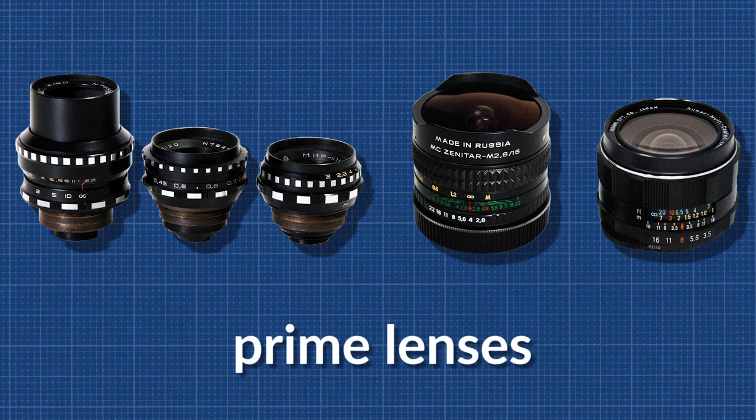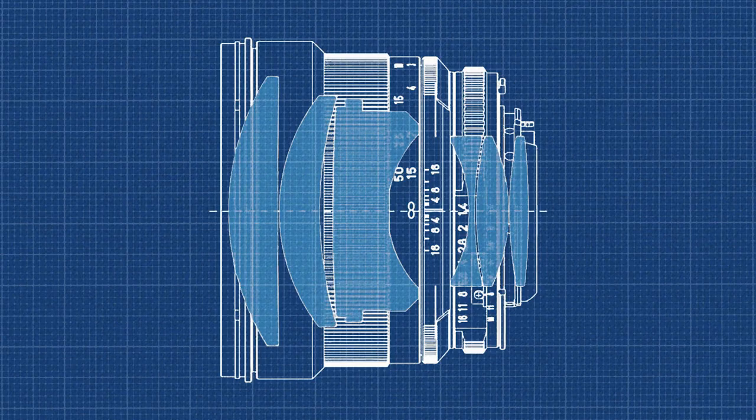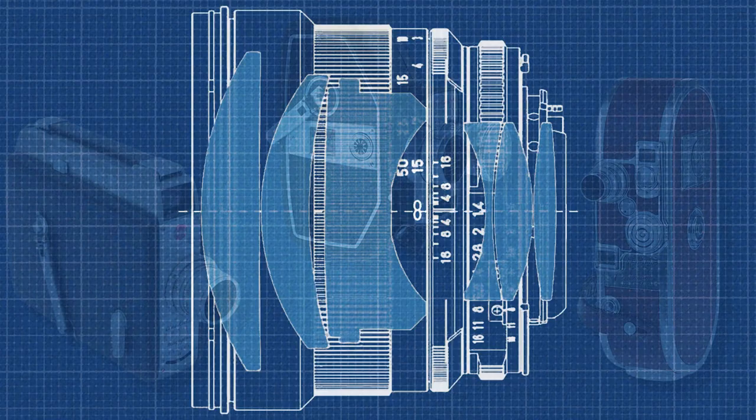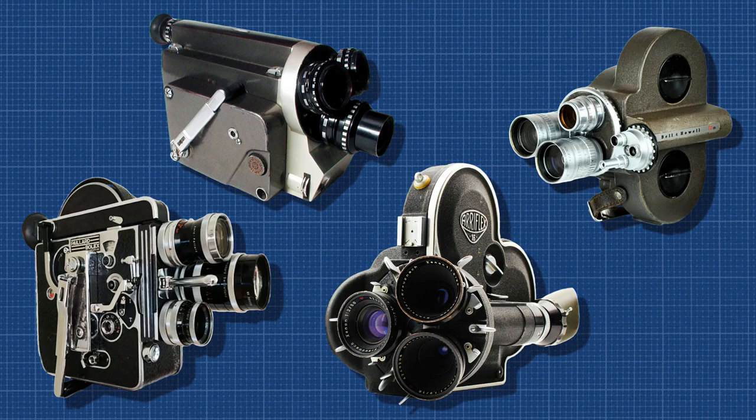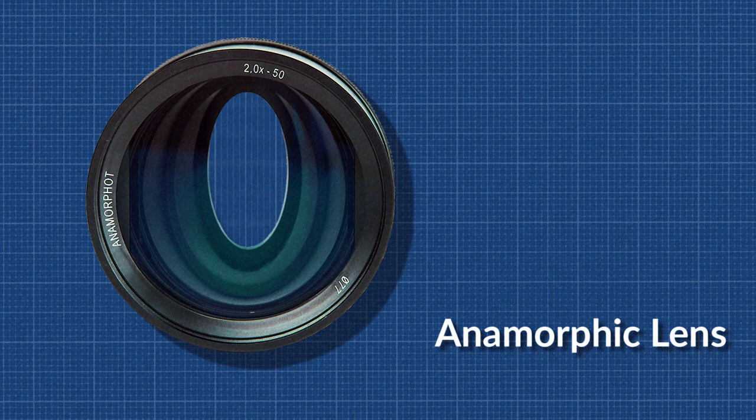Prime lenses have a fixed focal length. These tend to be simpler in design with fewer elements and are more affordable. You don't have the flexibility of a zoom lens, but prime lenses often perform better since they specialize in one focal length only. You can find prime lenses on most older 16mm cameras from the 1930s through 1960s, and they continue to be used today.